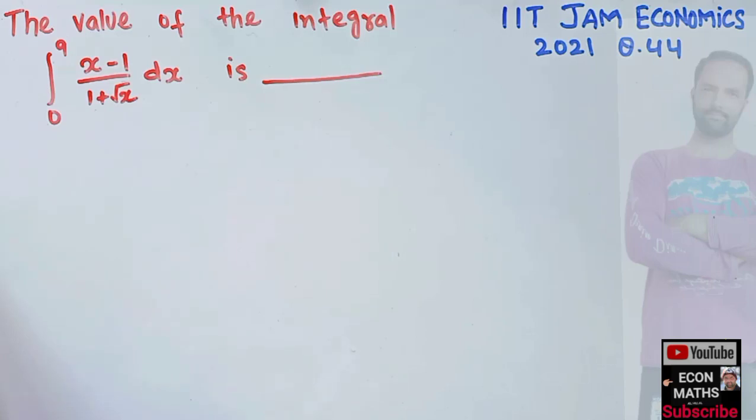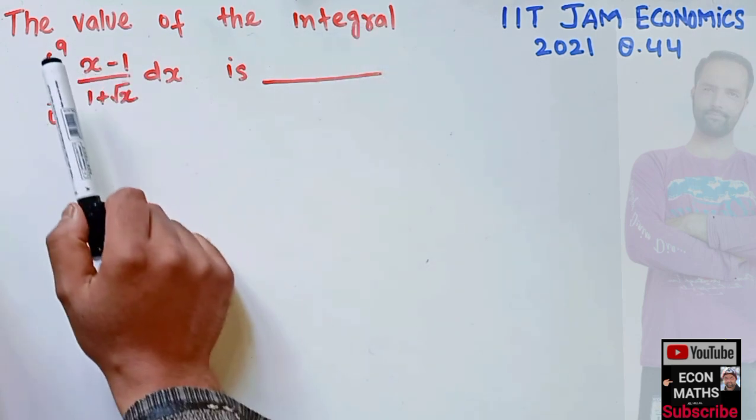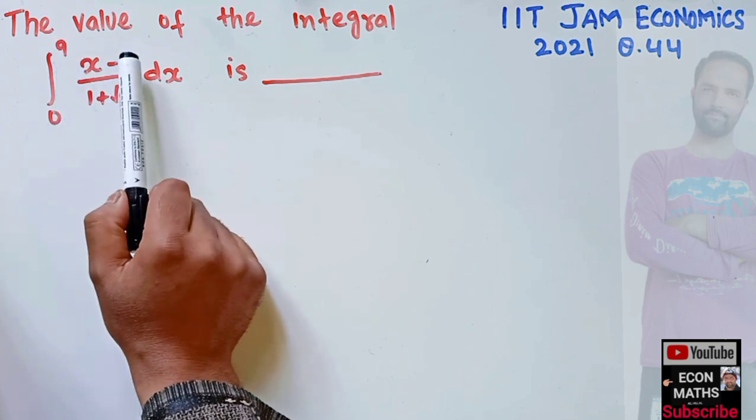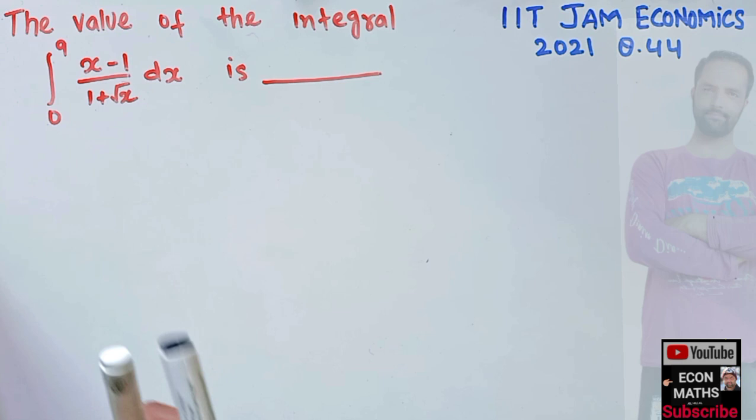In this video we will solve a problem on definite integral. This question was asked in IIT JAM Economics paper of 2021. The question is: find the value of the definite integral from 0 to 9 of (x-1)/(1+√x) dx.